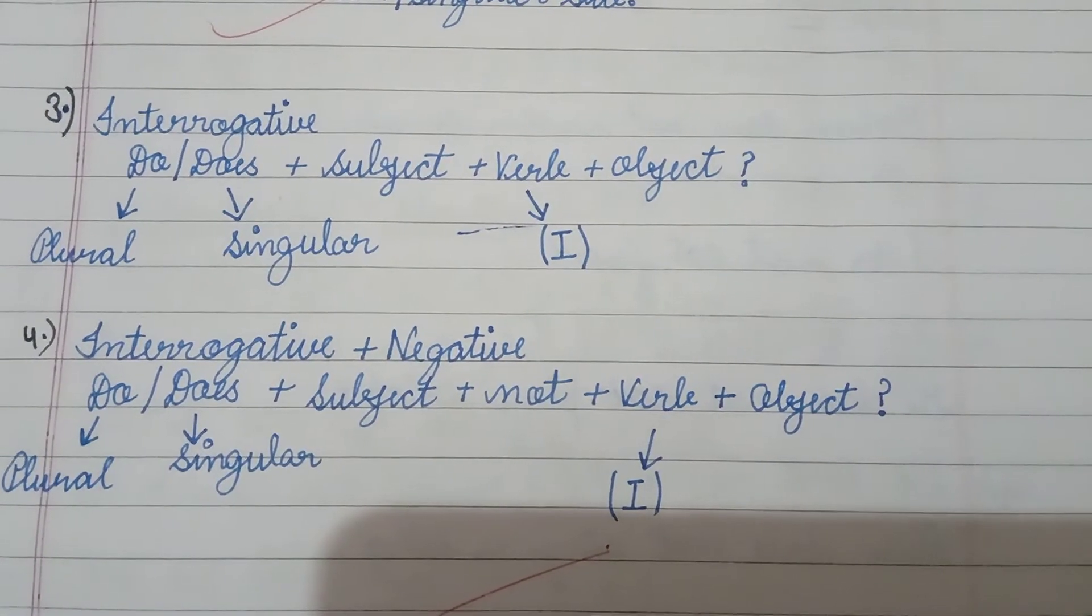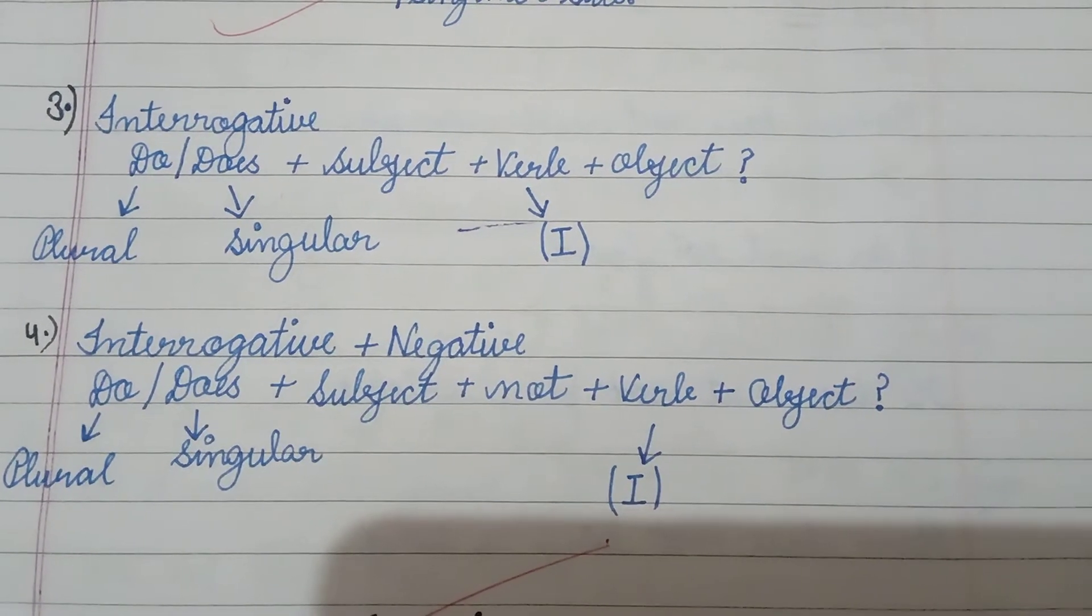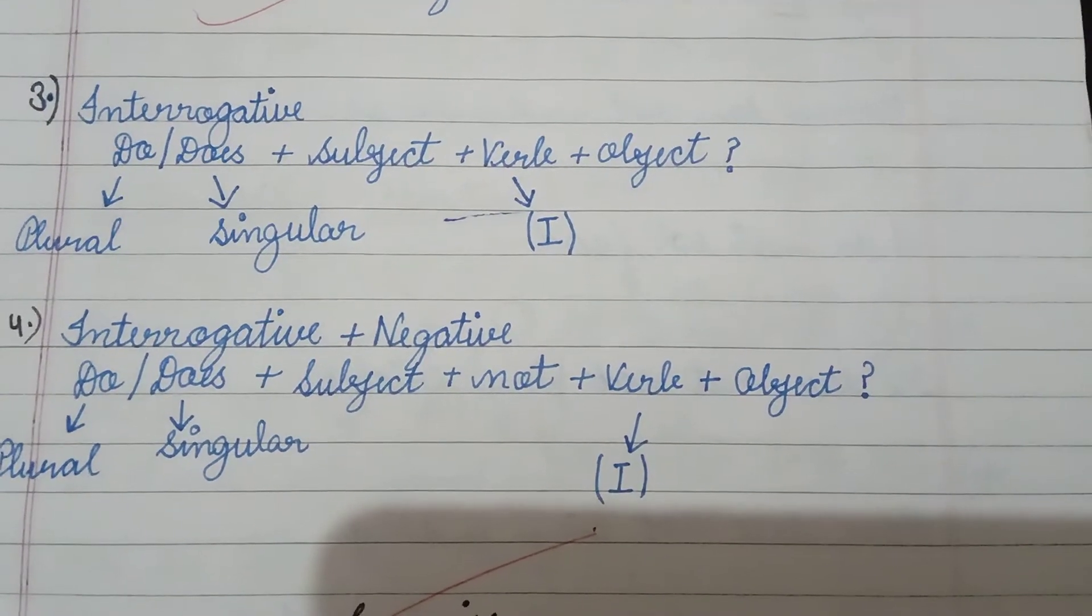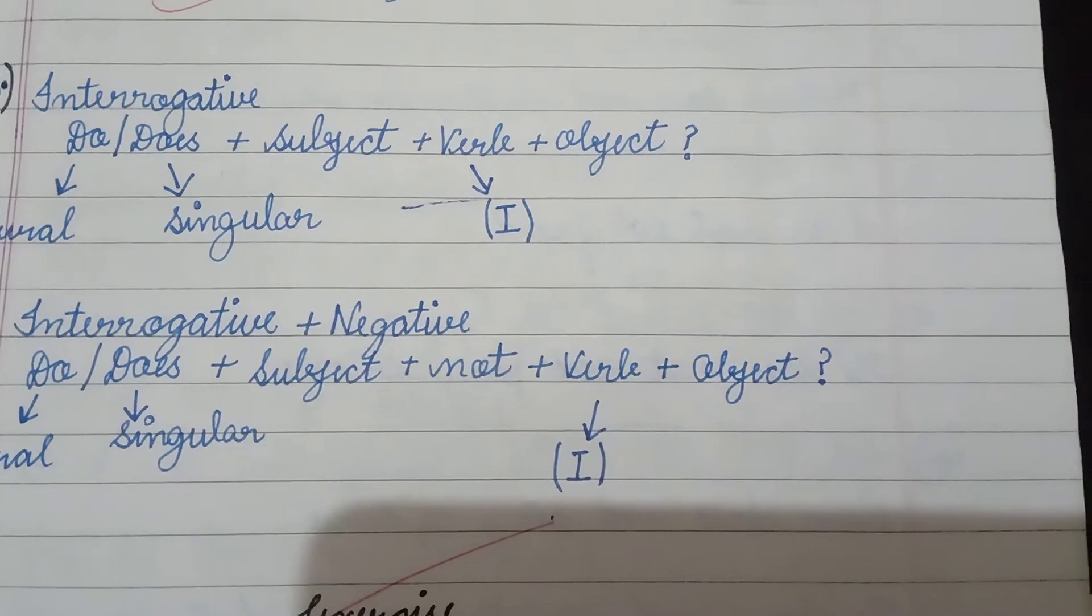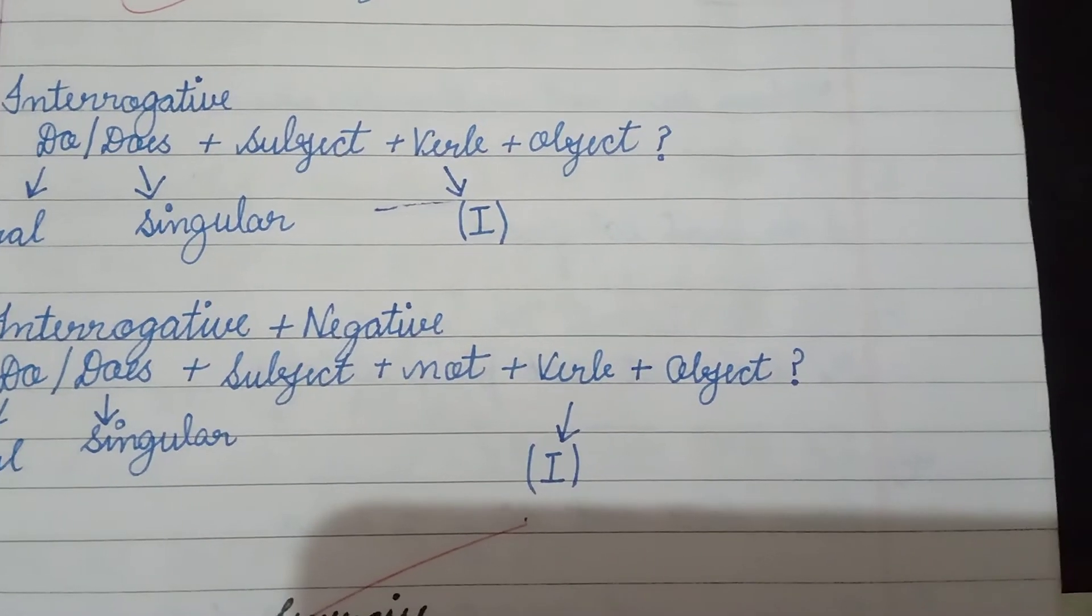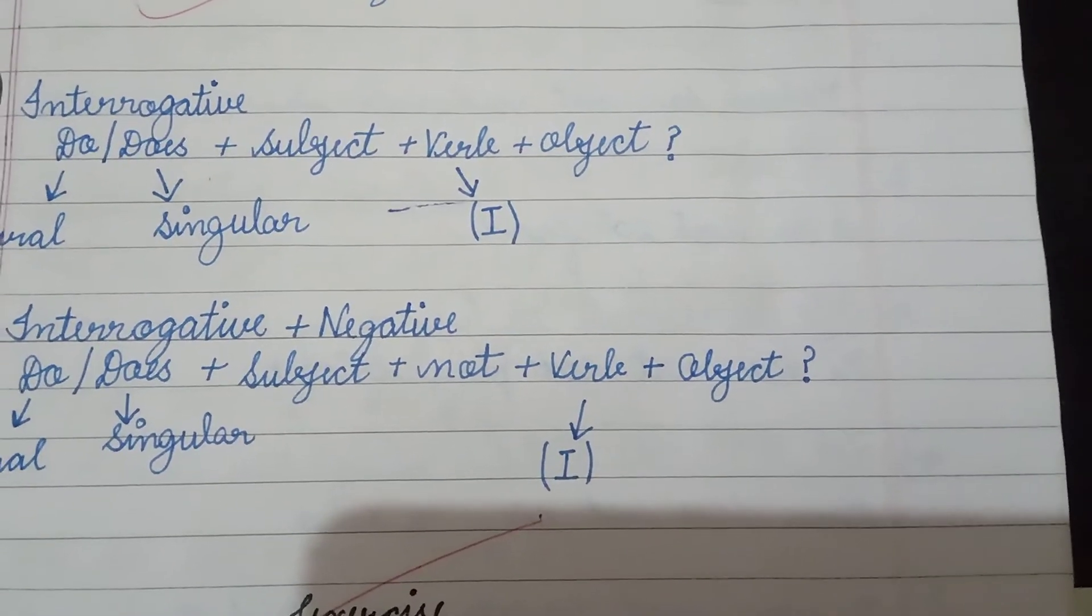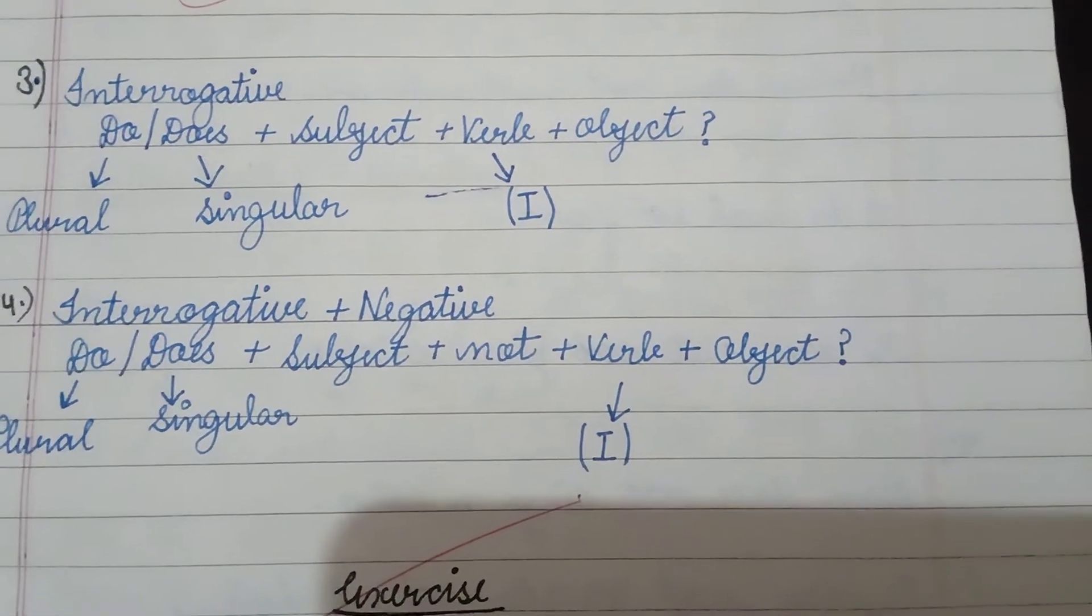I hope it's clear to you. We used does because Rohan is singular. Subject was Rohan, not because it is interonegative statement. And play was the first form of verb play. Object is football and we added question mark to suggest that it is a questioning or an interrogative statement.